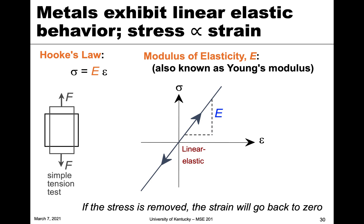Hooke's Law states that stress sigma equals the proportionality constant times strain. This is basically the slope of the stress-strain plot. The slope is that proportionality constant, and we call it the modulus of elasticity, or elastic modulus, or Young's modulus. It always has 'modulus' in the name, and we give it the symbol E.